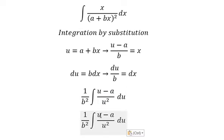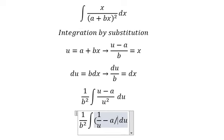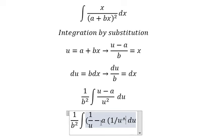Next, u divided by u square gives us one over u. The next one we have one over u square.